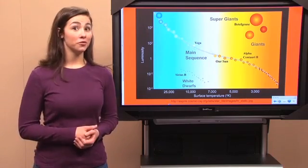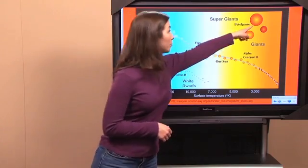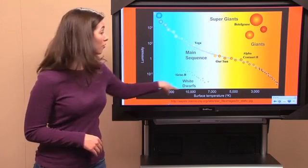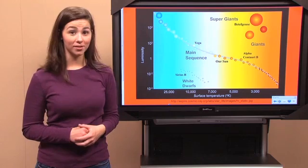So let's look at old Betelgeuse up there. Yeah, the one way up here. It's pretty high up on the diagram, right? That tells us that it's really, really bright. But it's also way over on the x-axis, which also tells us that it's very cold.